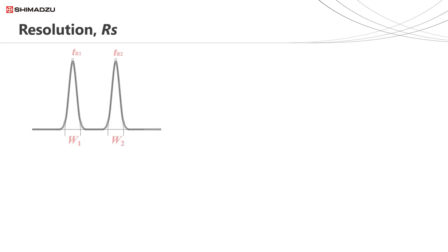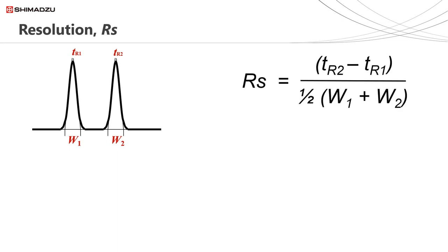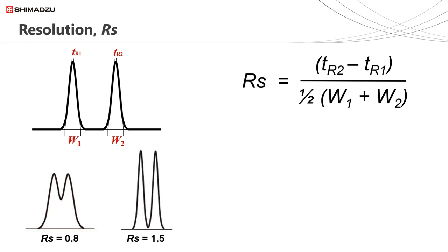I want to consider resolution and how efficiency, selectivity and retention all contribute towards resolution. If we have two peaks and know the retention times and peak widths, we can calculate the resolution between them using the equations shown on the slide. Note that this particular form of the equation is used by the United States Pharmacopeia — the European Pharmacopeia and other Pharmacopeias may differ slightly. Shown here are two peaks which are not baseline resolved — they have a resolution of 0.8. Mathematically speaking, a resolution of 1.5 is enough for two peaks to be baseline resolved, but in practice a resolution of 1.7 is typically required.